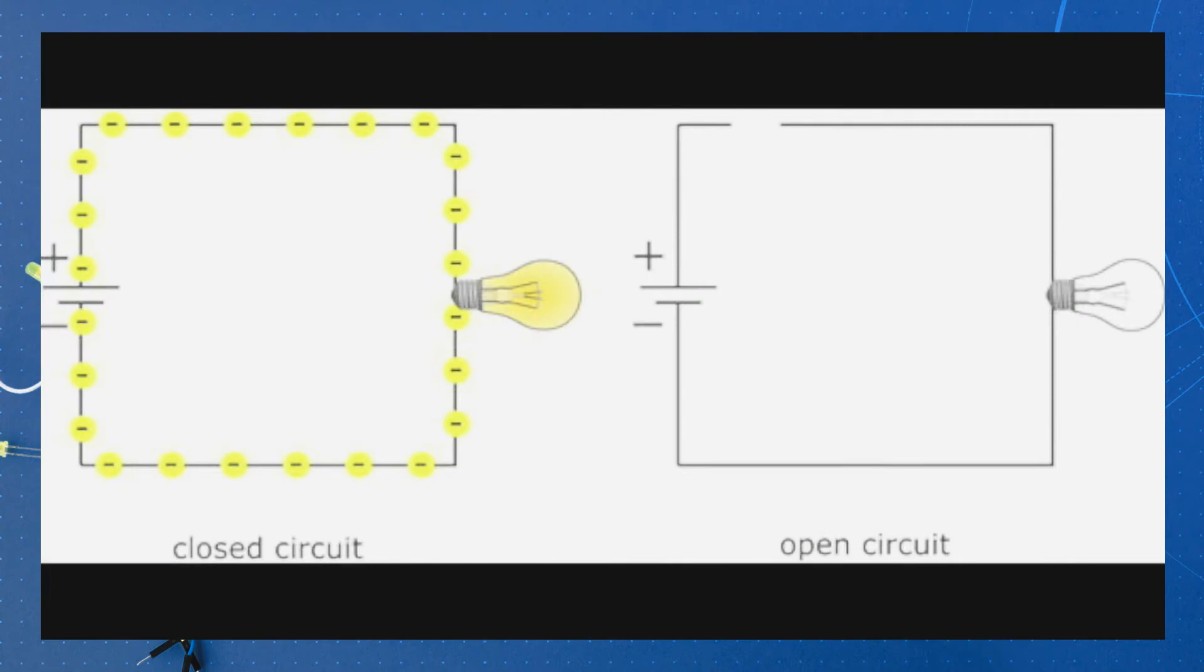When you have an open circuit, there is a connection break in our loop, which means the electricity stops flowing, also known as the switch being off. A closed circuit is when the connection break is closed or reconnected, leading to the flow of electricity to begin flowing again, or the on switch.